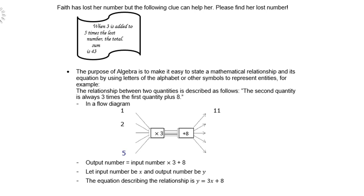If you go back to the example of Faith, you must try and make up an equation. When 3 is added to 5 times the lost number, let the lost number be x. Then it is 5 times x plus 3, so 5x plus 3 equals 43, and then you can solve for x.